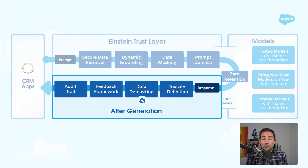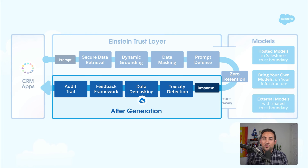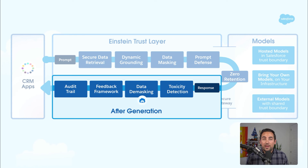Then, we're going to take all of the data that was masked in the original masking step and rehydrate it through de-masking, so that all of the data — like the name, first name, and addresses — are all put back into the response. And then it's ready to be presented back to the user.